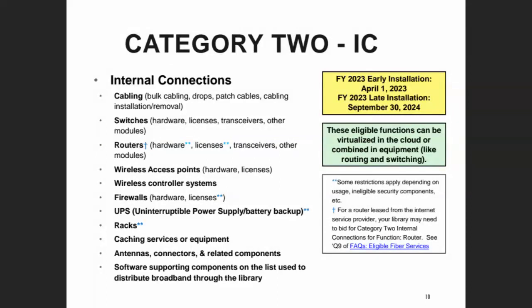Switches and any extra modules or transceivers you need, along with required licenses, are eligible. Routers and also licenses or other components are eligible. A big one for Kentucky libraries is wireless access points — both the physical hardware and the license — as well as any extra power supply needed to make that work. That extra component would be eligible along with antennas if you have an outdoor access point.